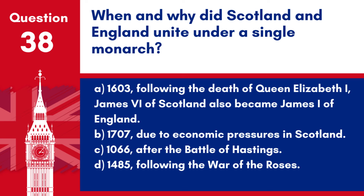Question 38. When and why did Scotland and England unite under a single monarch? a. 1603, following the death of Queen Elizabeth I — James VI of Scotland also became James I of England. b. 1707, due to economic pressures in Scotland. c. 1066, after the Battle of Hastings. d. 1485, following the War of the Roses.